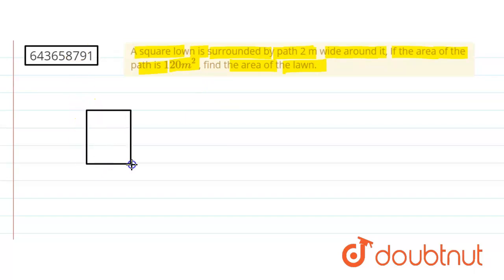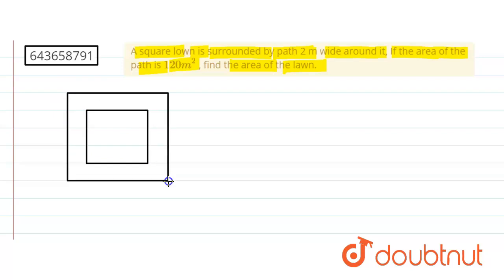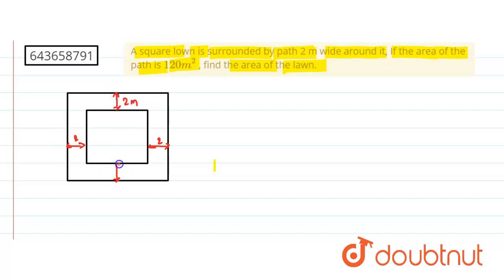So just see the scenario here. We have a square lawn, and a two-meter-wide path is there around it. This is a two-meter-wide path on each side — this side is two meters, this side is two meters, this side is two meters, and this side is also two meters.